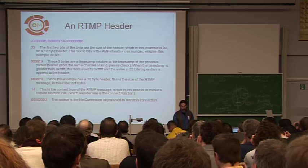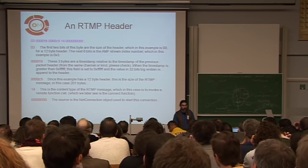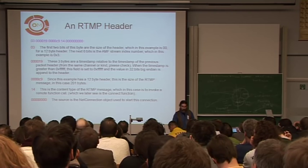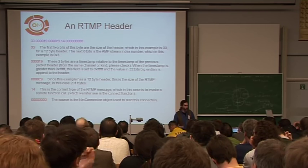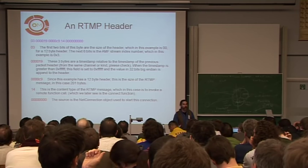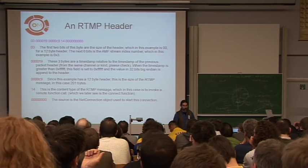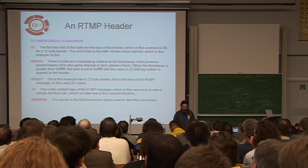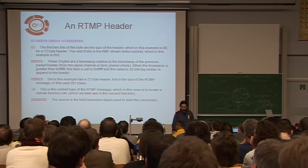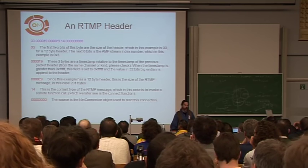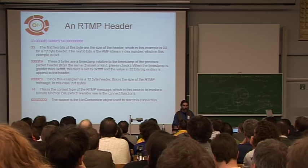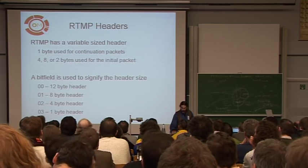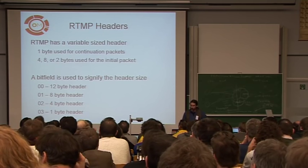Also, RTMP supports about 17 different data types, each one a particular type of ActionScript object. This is what's called a type 14, which is a remote invocation call. So basically, you can actually load executable code on the media server and then do remote calls on all the methods of that object, which is the whole point of doing RTMP. There's another field they call 'source,' but it just says whether the message comes from the server or from the client — I'm not sure why they even bothered to waste all those bytes, but they did.